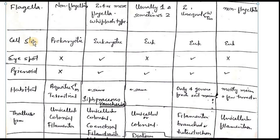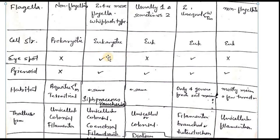On the basis of cell structure, we can place algae into two groups: prokaryotes and eukaryotes. On the basis of eye spot, for example, if you find a new algae containing an eye spot, you can place it in either Chlorophyceae or Phaeophyceae. It cannot be Bacillariophyceae, it cannot be red algae, and it cannot be Cyanophyceae. So we have different criteria for classification.